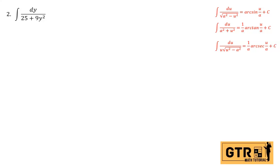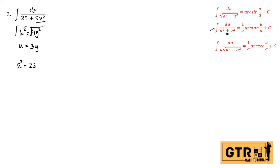Number two. We have the integral of dy over 25 plus 9y squared. This fits the arctangent formula, since the sign is positive and there is no square root. Our u squared is 9y squared, so u equals 3y. Our a squared is 25, so a equals 5. Then the differential: since u equals 3y, du equals 3 dy.